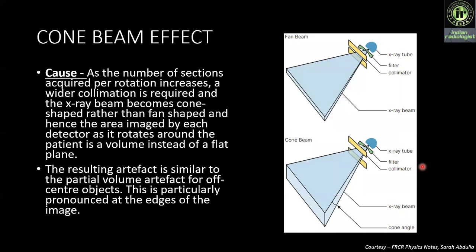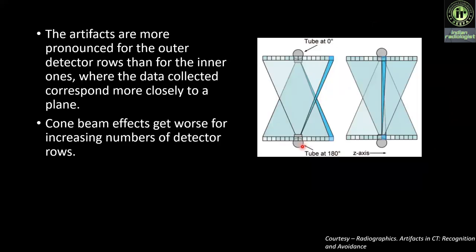Next is the cone beam effect. As the number of sections acquired per rotation increases, a wider collimation is required and the X-ray beam becomes cone-shaped rather than fan-shaped. Hence the area sampled by each detector as it rotates around the patient is a volume instead of a flat plane. The resulting artifact is similar to partial volume artifacts for off-center objects. As the number of sections increases, we must widen the collimator, which results in a cone beam. The artifacts are more pronounced for outer detector rows than for the inner ones. Here the beam towards the outer detector looks like a cone, while the beam towards the central detector looks more or less like a plane.